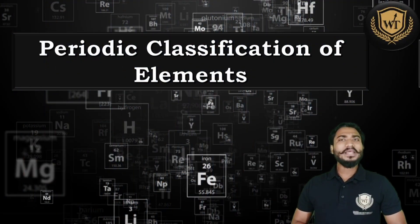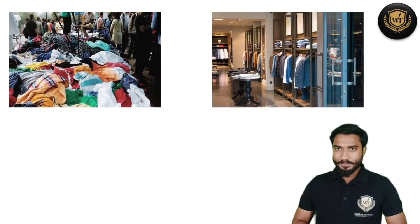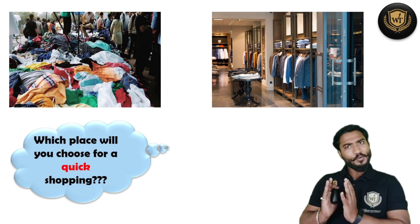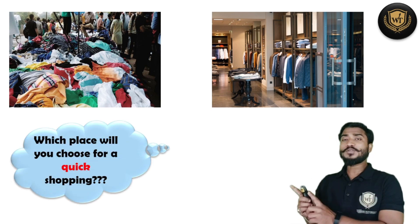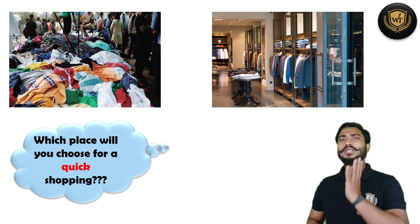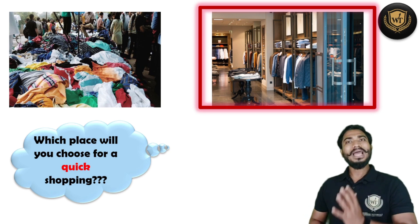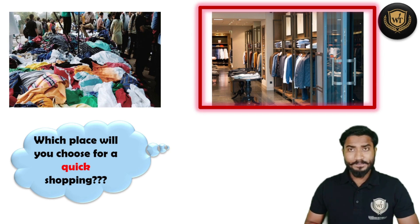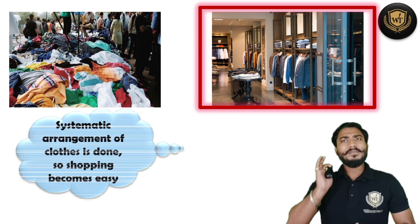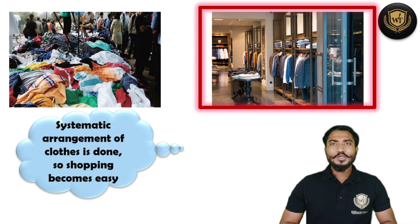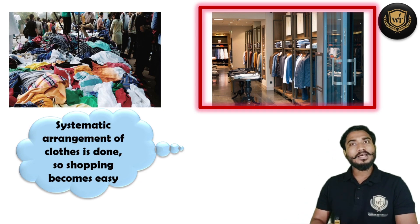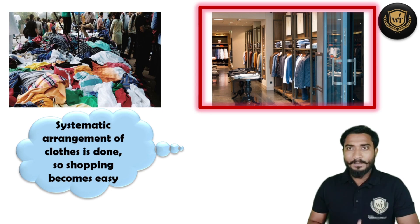Before we begin with this chapter, I'll give you two situations. On this screen you can observe two places. Now if you want to go for a very quick shopping, out of these two places which place would you select? Correct — you selected place number two. Why? Because there the clothes are systematically arranged. Since there was a systematic arrangement, the task of shopping became very simple.